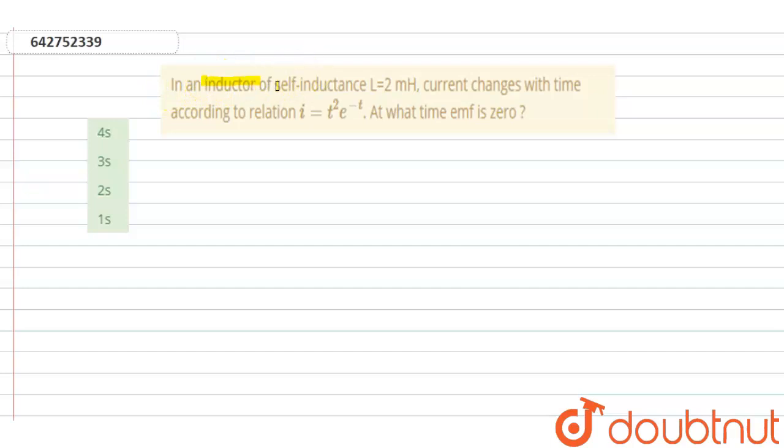Hello students, our question is: In an inductor of self-inductance L is equal to 2 millihenry, current changes with time according to relation i is equal to t square e power minus t. At what time emf is 0?